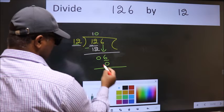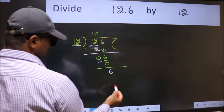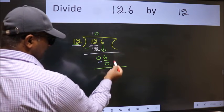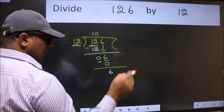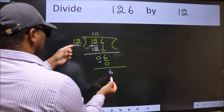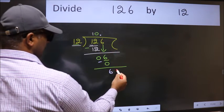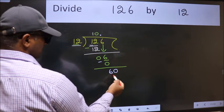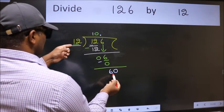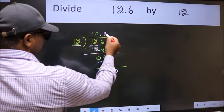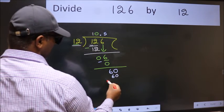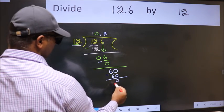Now we subtract, we get 6. Over here we did not bring any number down and 6 is smaller than 12. So now we can put dot and take 0. So 60. When do we get 60 in 12 table? 12 fives is 60. Now we subtract, we get 0.